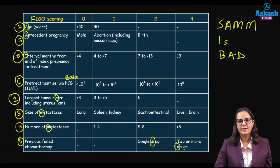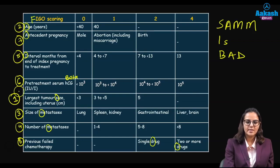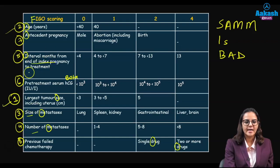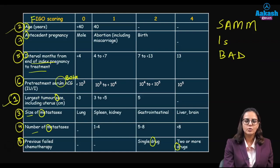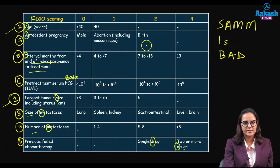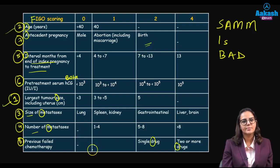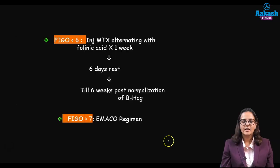The FIGO GTN score ranges from 0 to 4, with eight factors assessed. The mnemonic is SAM IS BAD: S — largest tumor Size; A — Age in years; M — Metastasis site and number; I — Interval in months from end of index pregnancy to start of treatment; S — Serum beta-hCG value; B — antecedent pregnancy type (highest risk is prior live Birth); A — Antecedent pregnancy; D — previous failed chemotherapy (single or multiple Drug).